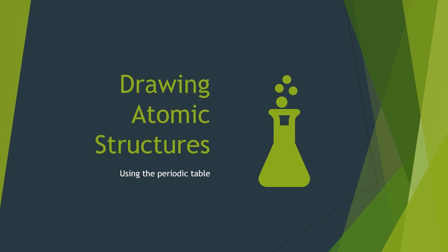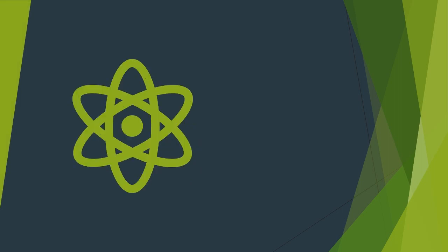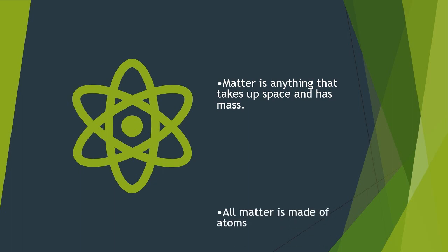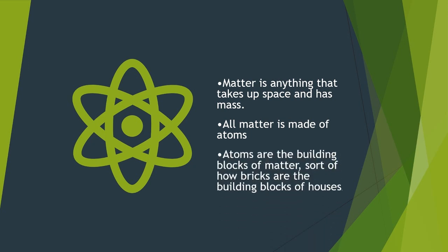Hey everyone and welcome back to our next video in the series about atoms and their structures. Today we're actually going to get into how to draw these things. Previously we were talking a lot about the atom. We know that matter is anything that takes up space and has mass. We've realized that all matter is made up of these atoms. And atoms ultimately, being the building blocks of matter, they're kind of really like what you build anything out of. So they're kind of like the bricks that make up a house, if you want to think in those terms.